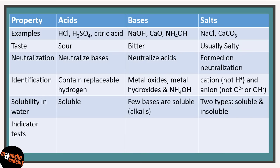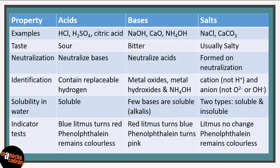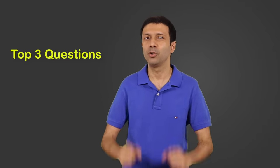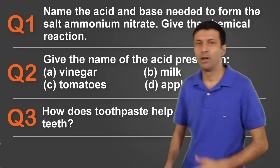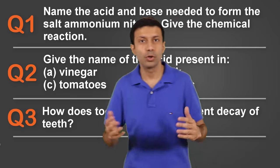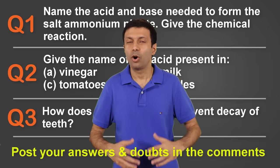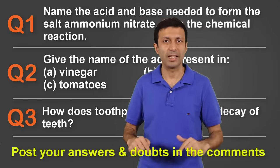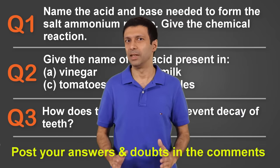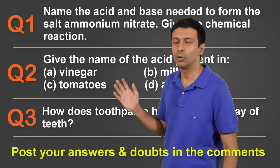Let's fill in the results of our indicator tests — the litmus and phenolphthalein tests — in our table. Now that we are done with the concept of acids, bases and salts, are you ready for the top three questions on this topic? Pause the video right here and try solving these questions. Do post your answers in the comments below, or if you have any doubts, feel free to write in the comments below. I promise to answer all your comments promptly.